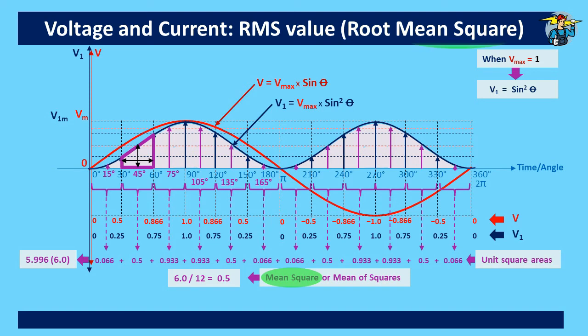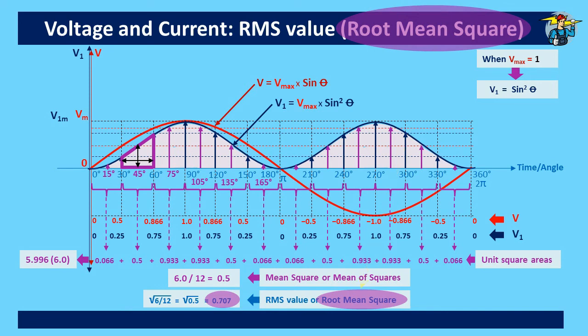For mean square, or mean of squares, you get the value of 0.5. To get the root mean square value, you need to get the square root of this mean square value. The square root of 0.5 is 0.707, and is the root mean square value we are looking for.